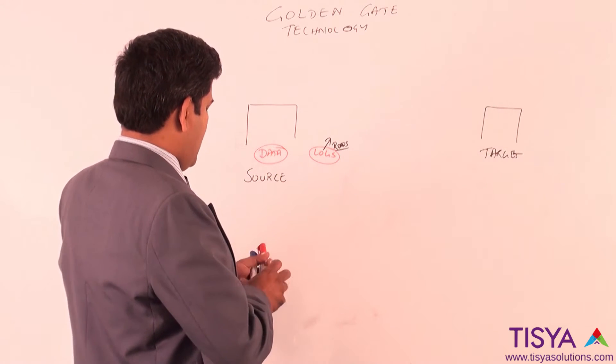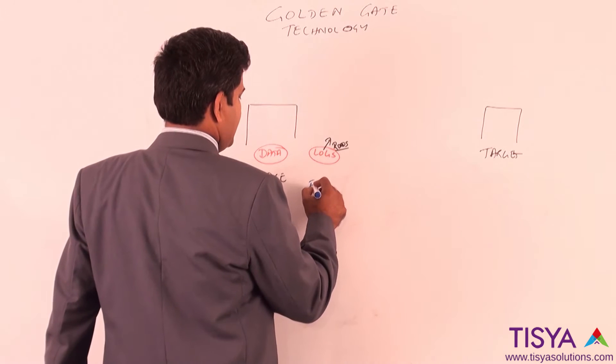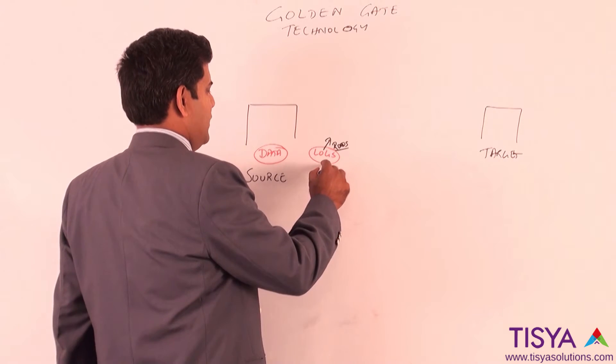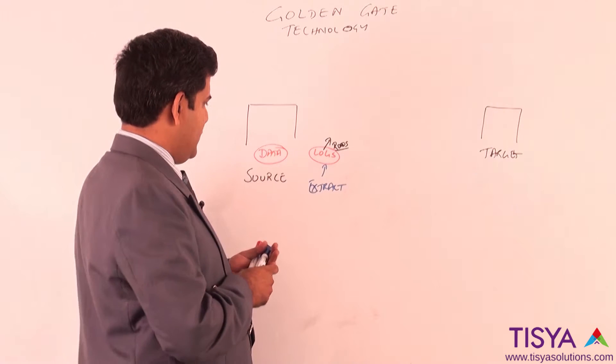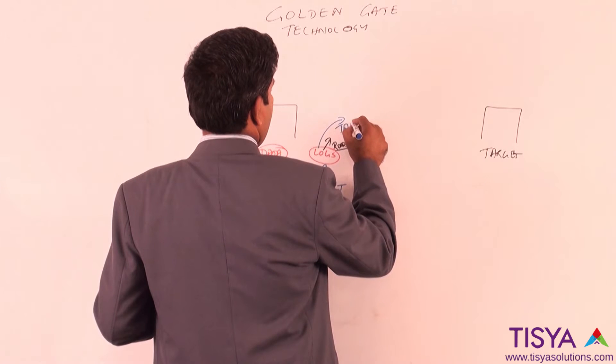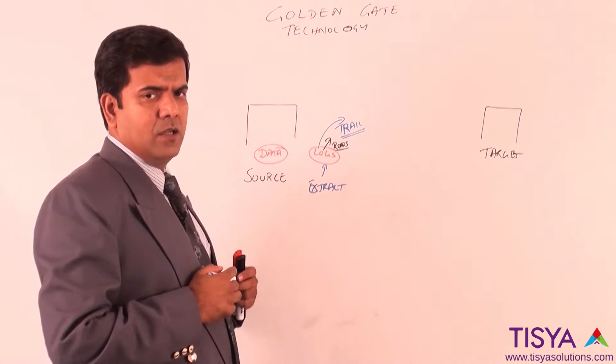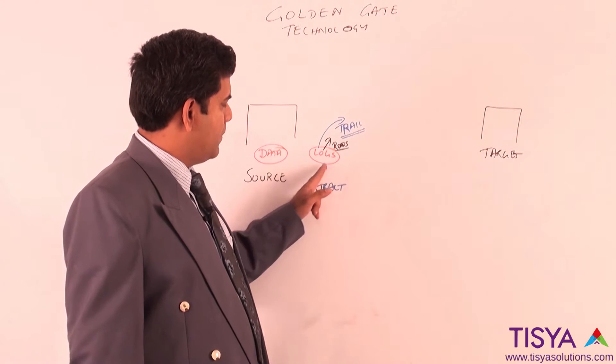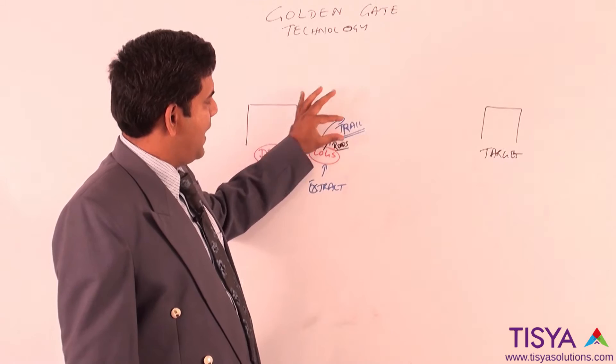Here is the first process we are going to talk about which is an extract. The job of an extract is to read from the transaction logs and write to something called a trail. The first task Golden Gate would do is to read from the transaction log through a program called extract which will extract the transactions from the logs and write it to a trail.